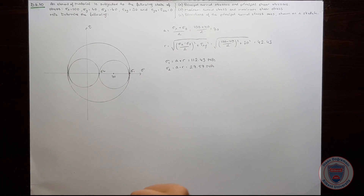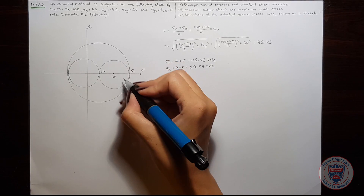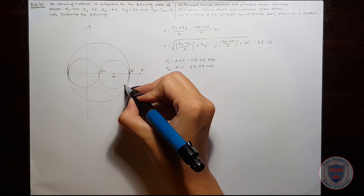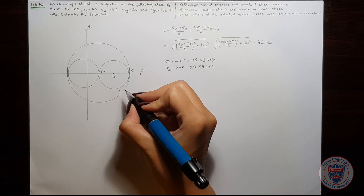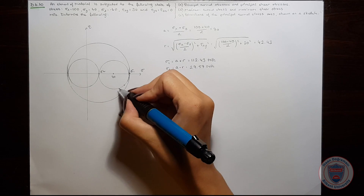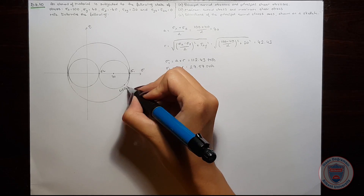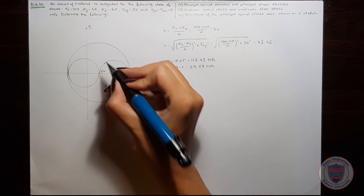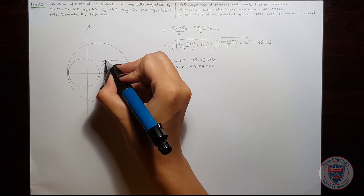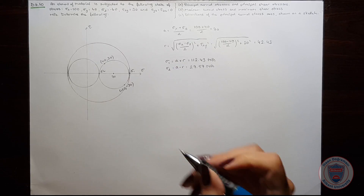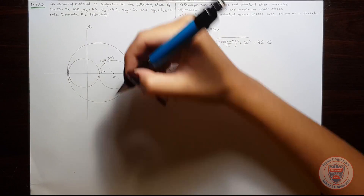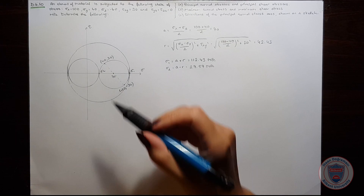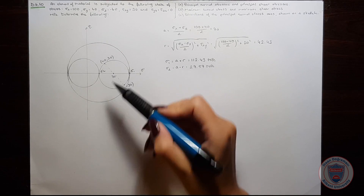We know that this point is sigma 1 and this point is sigma 2. Let's also show sigma x and sigma y. This point will be sigma x comma minus tau xy, so it is 100 comma minus 30. And this point will be 40 comma 30. When we connect these points, we get the center, which is 70.